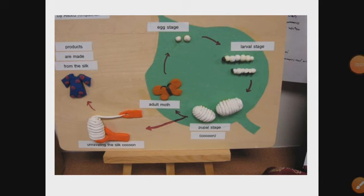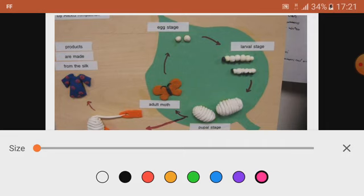In this activity you can see a model prepared using simple materials like clay and colored paper. The adult moth laying eggs on mulberry leaves is shown as the first stage. It then develops into larva, then cocoon, and pupal stages. From the cocoon stage, we can take out the silk fiber, and that process is known as reeling.